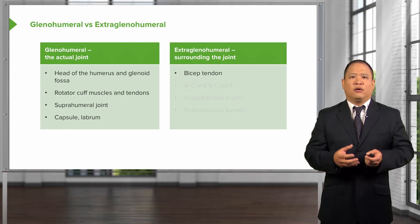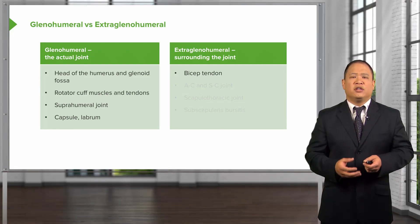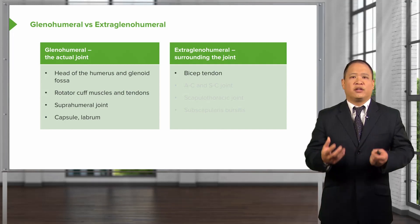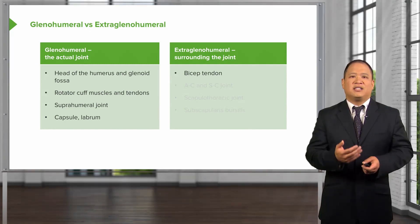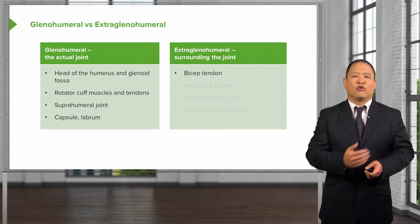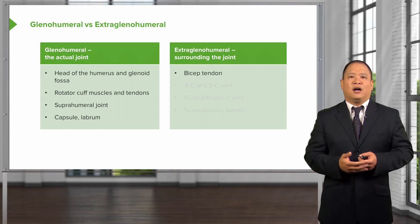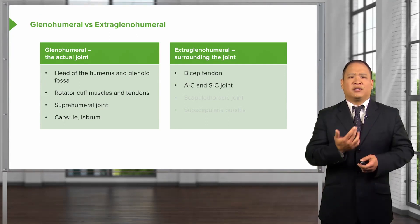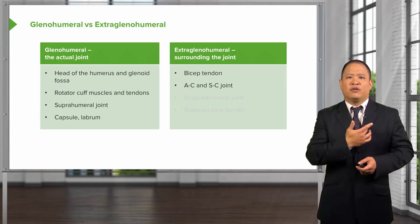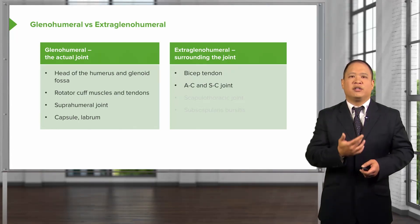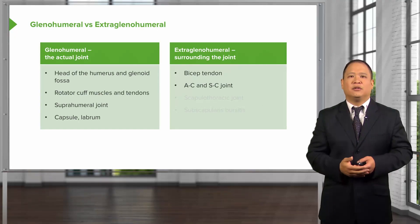Extra-glenohumeral joint issues are structures outside the joint that could become inflamed or injured and cause shoulder pain. The bicep tendon runs on the anterior portion of the humerus, and overuse or inflammation can cause bicep tendon pain. Regarding the clavicle, any irritation, displacement, or injury to the AC or SC joints could limit joint motion and cause pain.